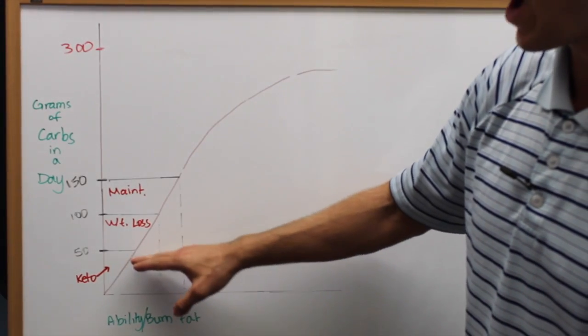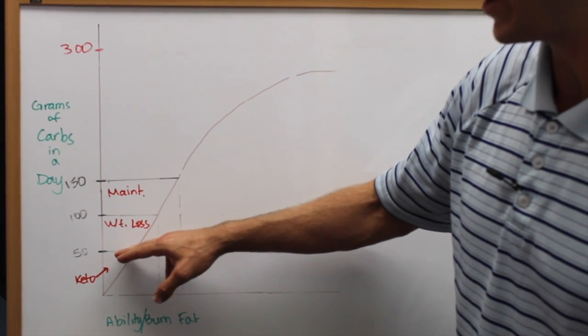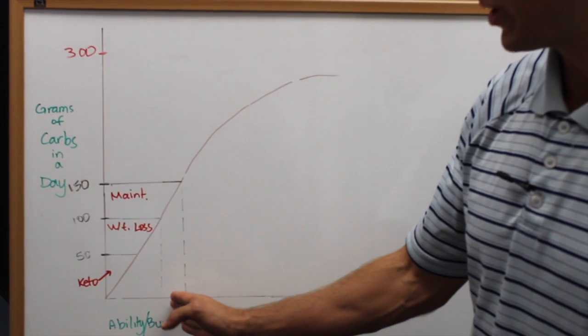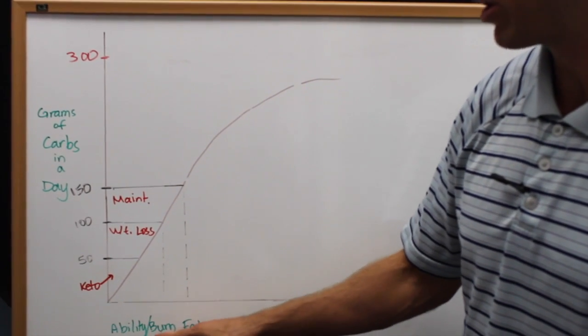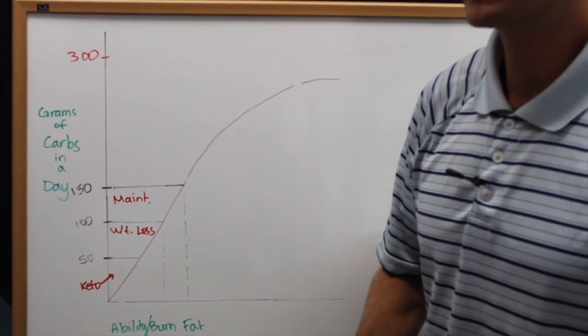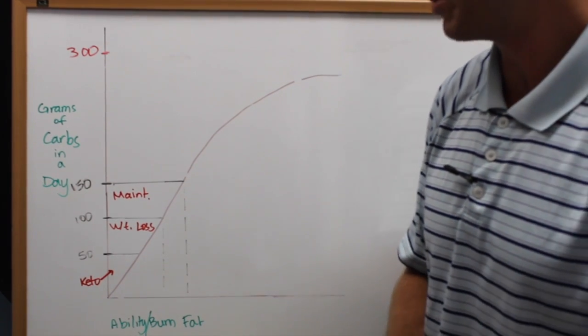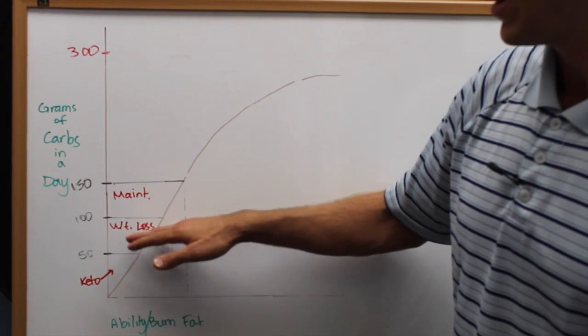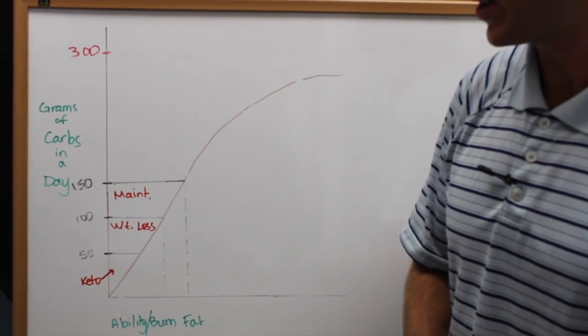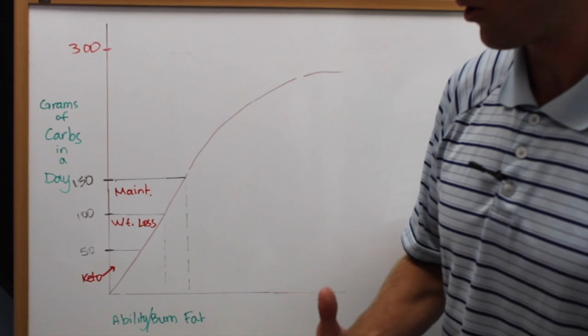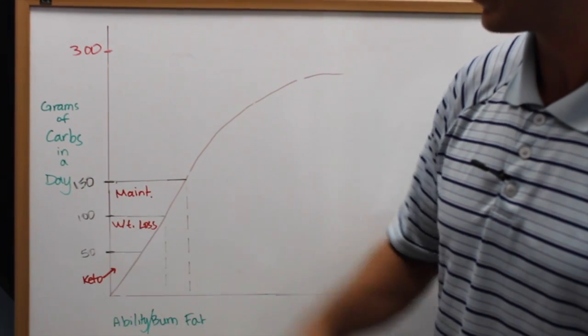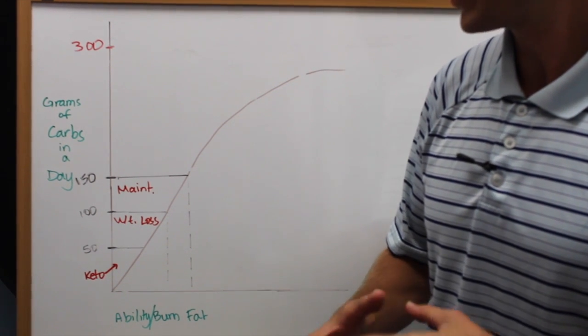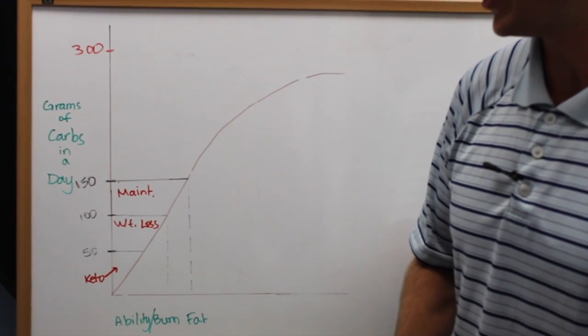On the other end of the graph, we have from 50 carbohydrates a day and below. We call this the ketogenic phase. In this phase, we have the highest probability of your ability to burn fat, which means your body is going to shed weight incredibly fast. Just above that, we have the weight loss zone. A lot of people like to stay in this zone because it's easier. Things happen a little slower. But between 50 and 100 carbohydrates a day, you are still going to lose weight based on your genetic ability and your lifestyle.